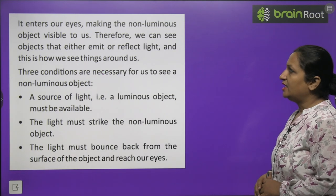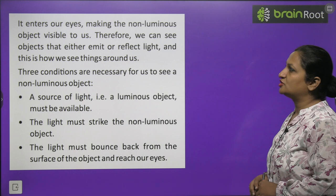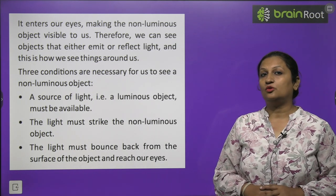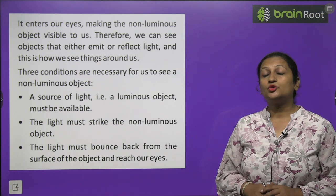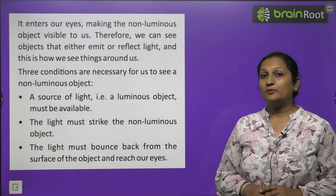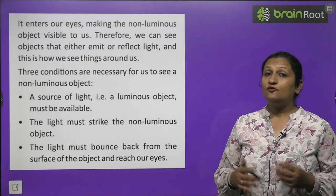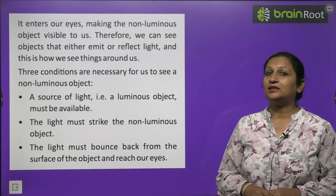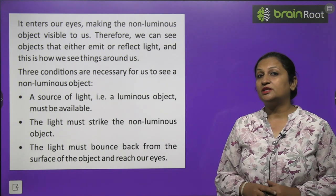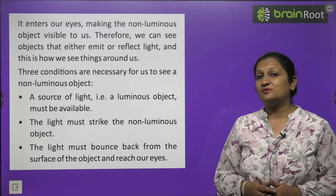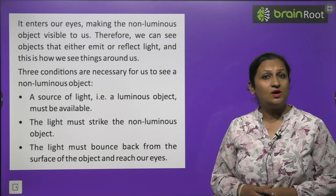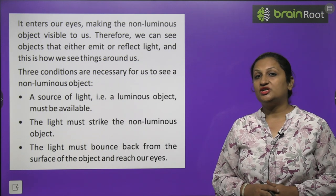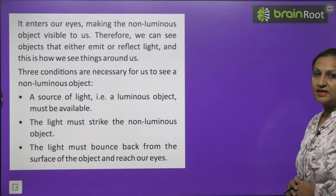The light from the luminous object falls on the non-luminous object and after bouncing back from the surface of the object, it enters our eyes making the non-luminous object visible to us. If we go into a completely dark room with no source of light, we can't move around — we'd bump into tables and chairs because nothing is visible. But if we open a window and sunlight enters, the chair and table become visible because light reflects off them back into our eyes.